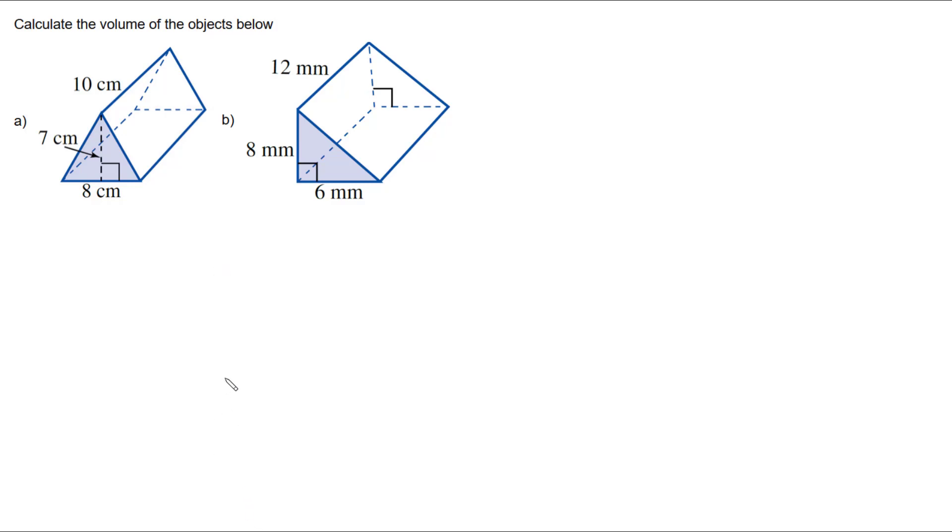Hi, in this video I'm looking at calculating the volume of these two triangular prisms. We can see that they're triangular prisms because they have this triangle shape at the front and that extends all the way to the same triangle shape at the back.